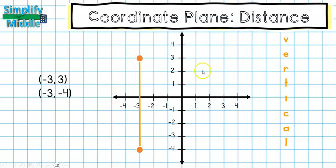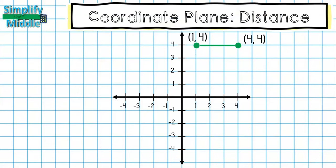In this one, we can see our x-coordinates are both negative 3. So anytime that two ordered pairs have the same x-coordinate, they make a vertical line. Now that we understand the difference between them, let's practice trying to find the distance between them.